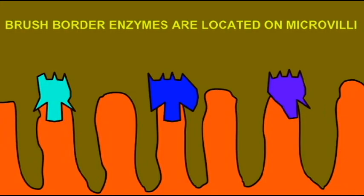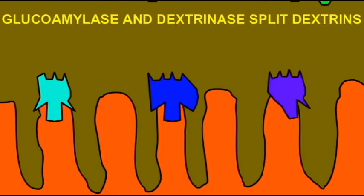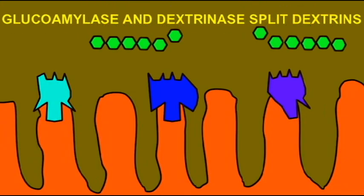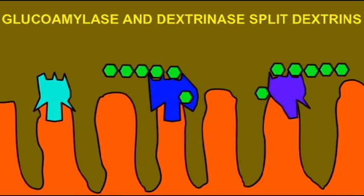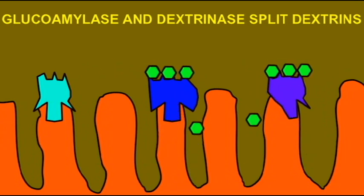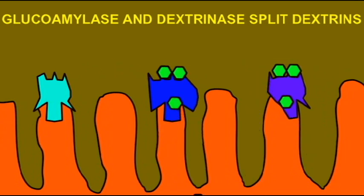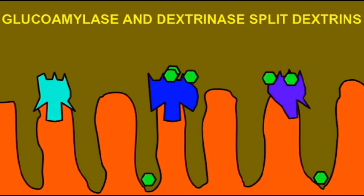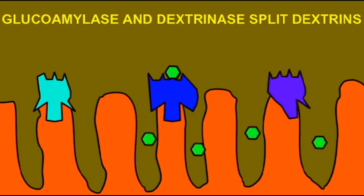Many enzymes are located at the cell membrane, such as these located on the brush border of intestinal cells. Thus, many chemical reactions occur along the cell membrane.